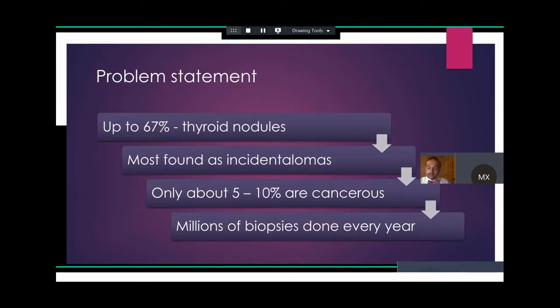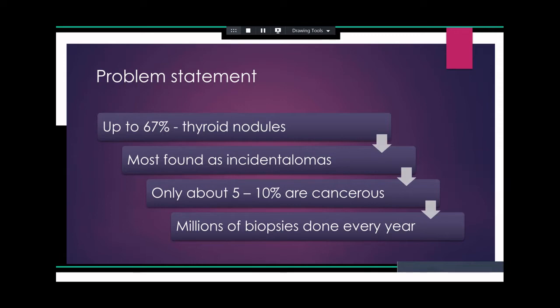As you all know, up to 67% of the patients in the normal population may have thyroid nodules, according to different population studies. But most of them that we find in our clinics are found as incidentalomas. And only about 5 to 10% of them are cancerous. And we are doing millions of biopsies around the world to find this small amount of cancer.